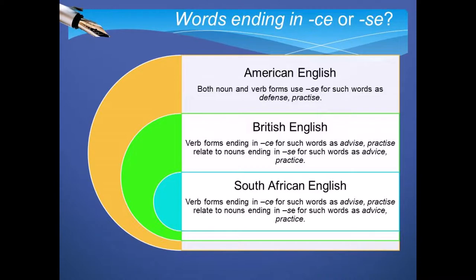What about words ending in CE or SE? In British and South African English, the verb that relates to a noun ending in CE is sometimes given the ending SE. For example, advice (noun) and advise (verb). American English uses SE for both the noun and verb forms of these words. It also uses SE for other nouns which in British and South African English are spelled CE, including defence, offence, pretense.